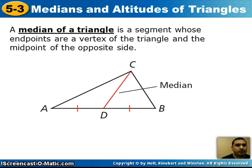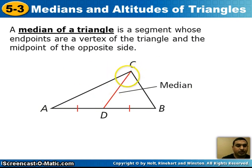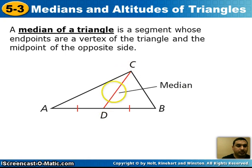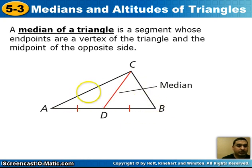A median of a triangle is a segment whose endpoints are a vertex of the triangle and the midpoint of the opposite side. Looking at this picture, we're drawing a line from vertex C going straight across to midpoint D. This red line is one median. We could also draw another median going from A to segment CB, and from point B to segment AC, giving us three medians.